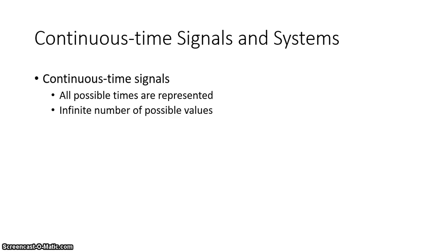Those values — for instance, if we're talking about voltage — can be 0 volts, 0.1111 volts, and so on. You can see why we say there's an infinite number of possible values associated with continuous time. For all possible times within the range, there's a value, and we can have an infinite number of such values. That's why we call it a continuous time signal.